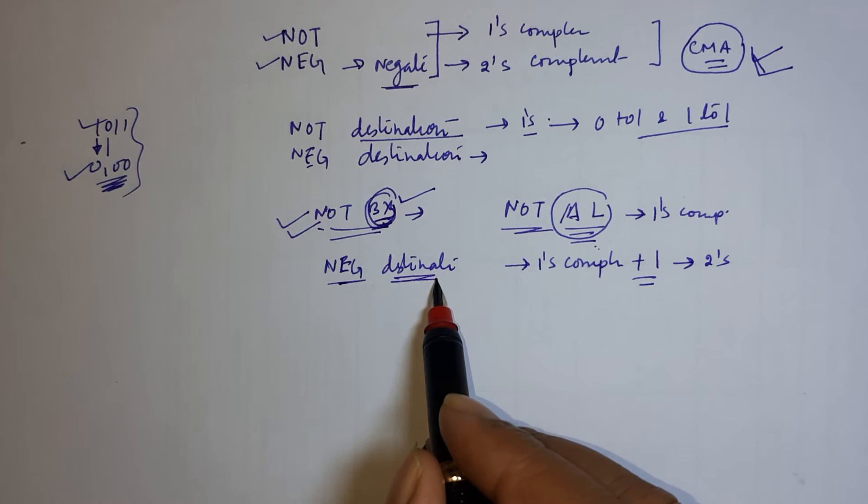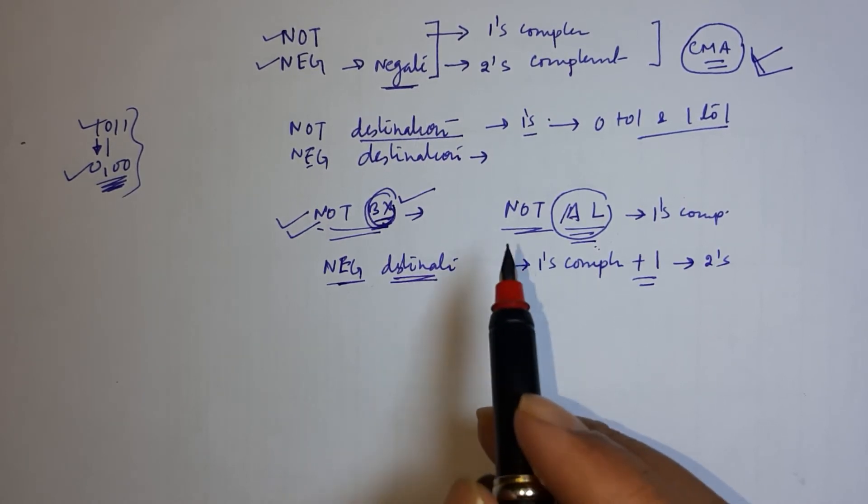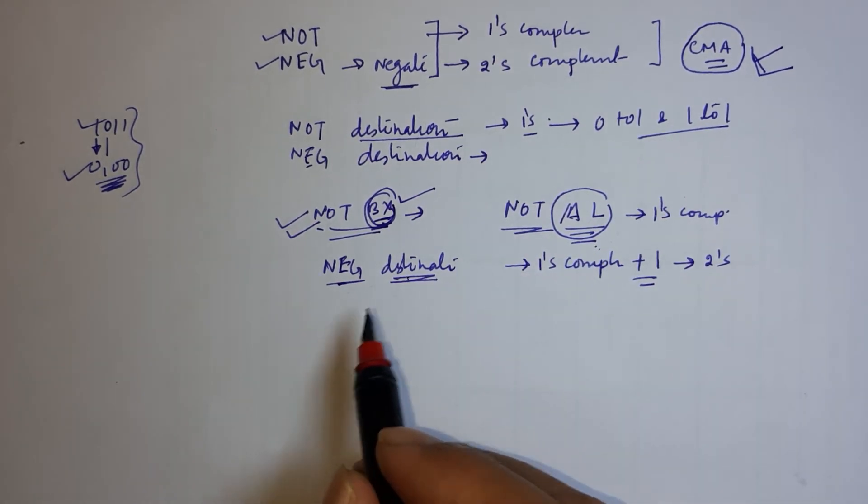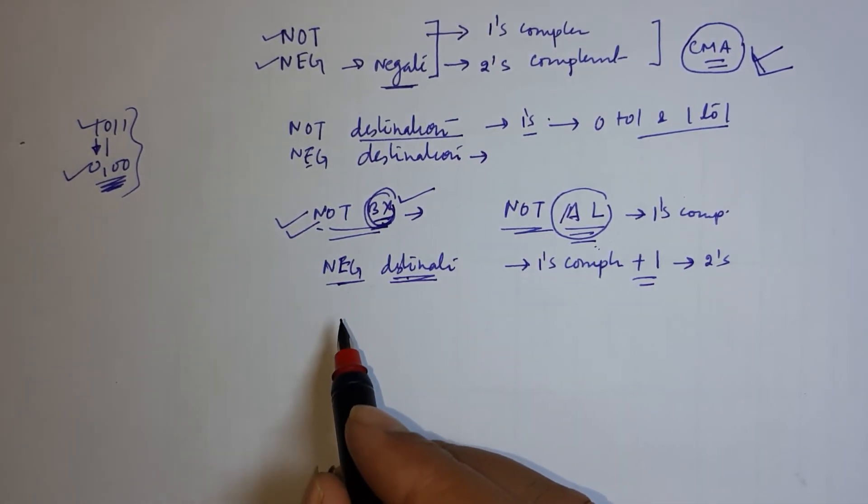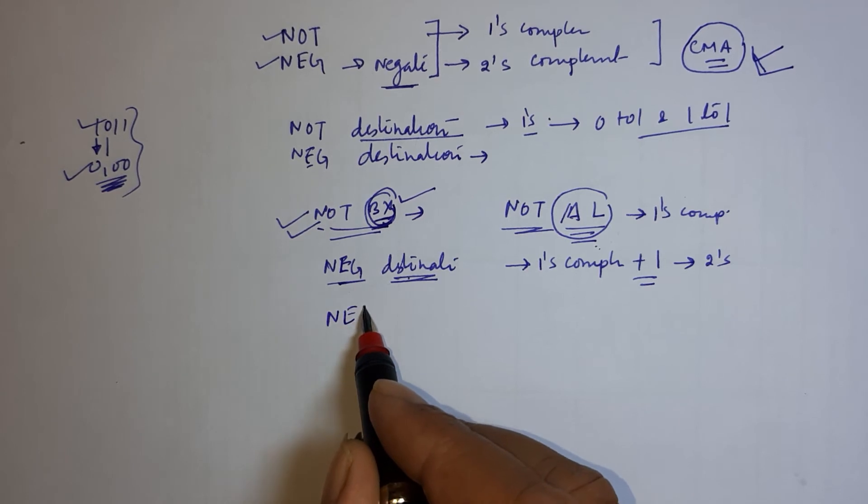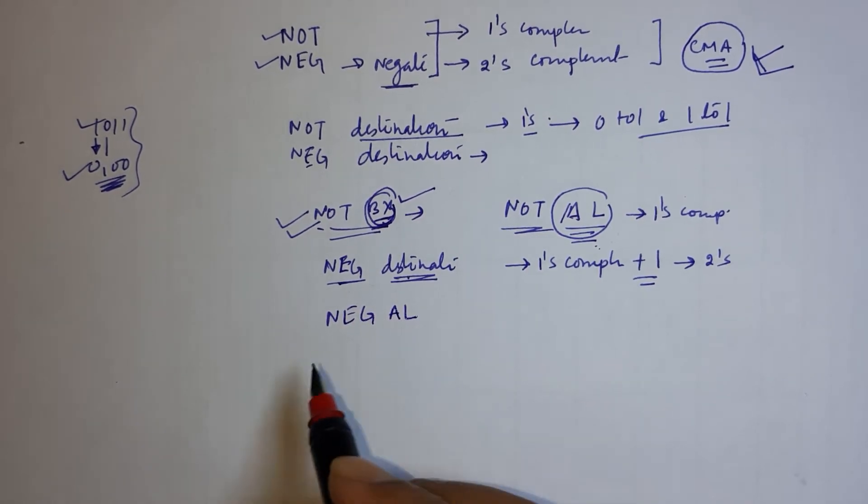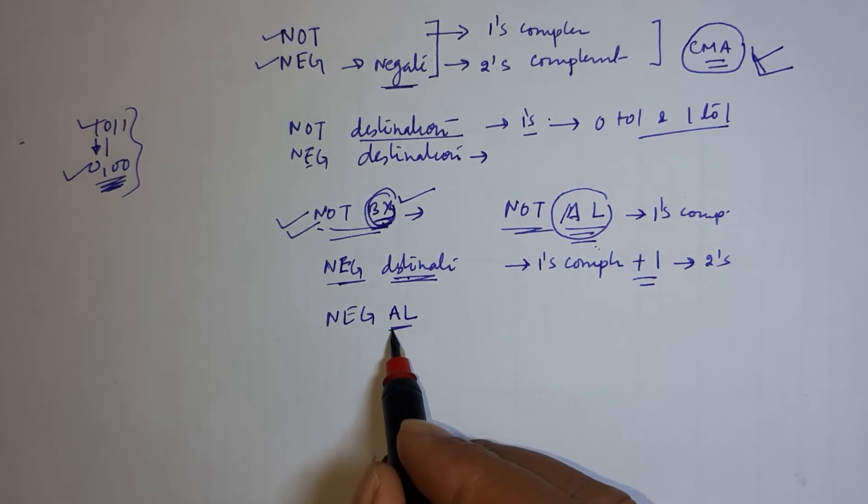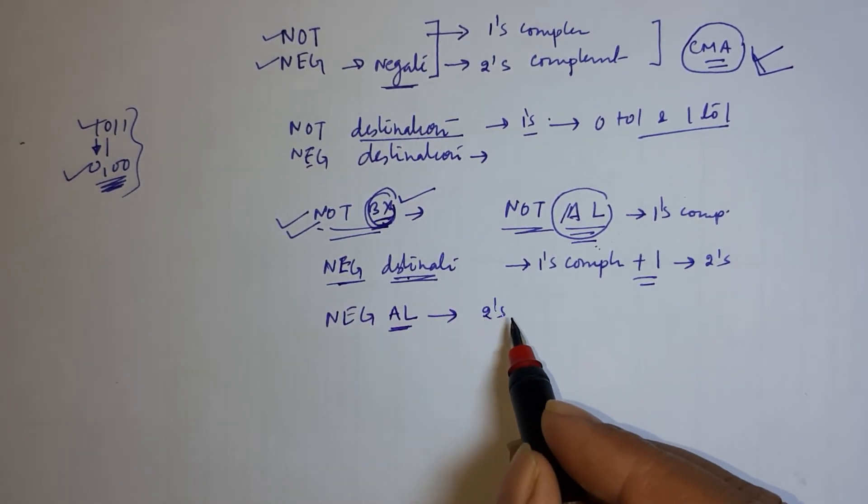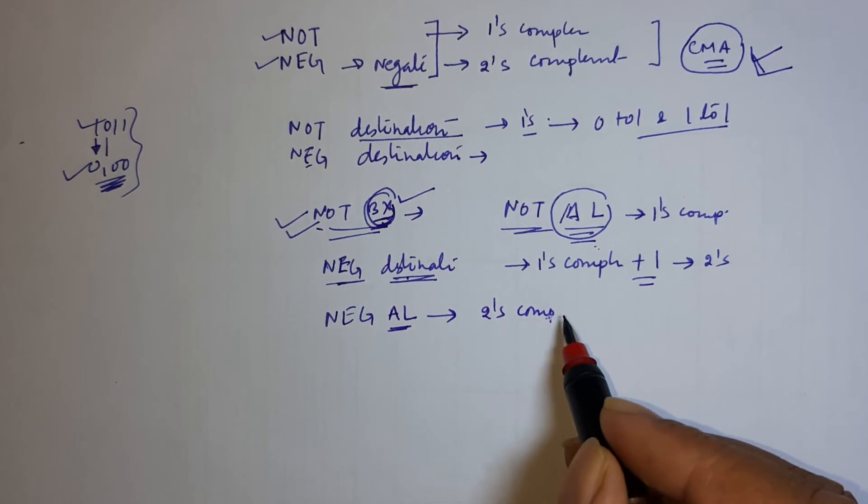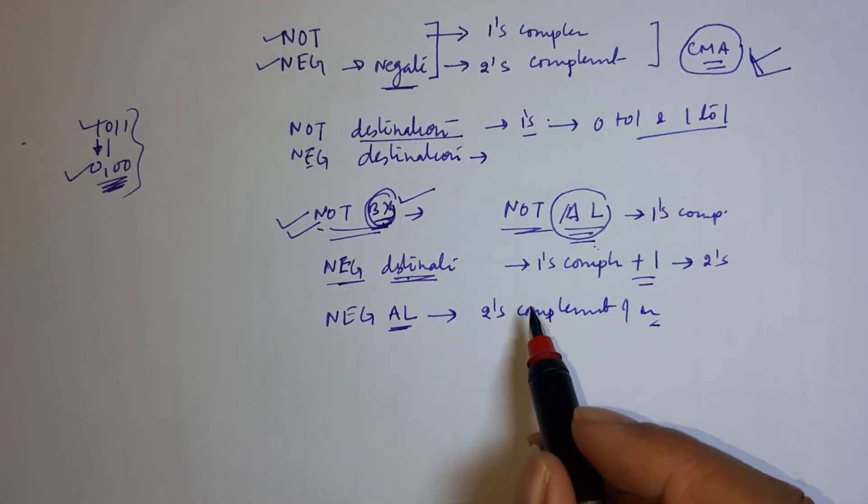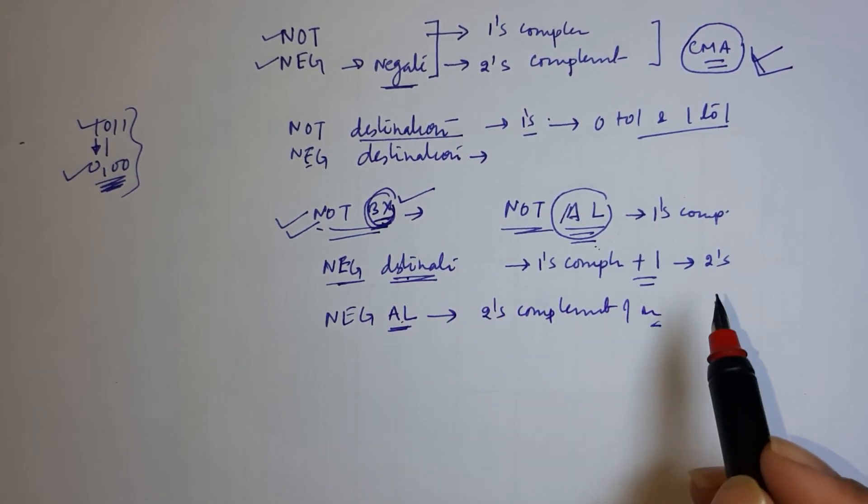So at the place of destination, you can mention memory or register. So I am taking two or three examples so you can easily understand. Suppose NEG is AL. What will happen? This will replace the content of AL with two's complement of that number. Two's complement is one's complement plus one.